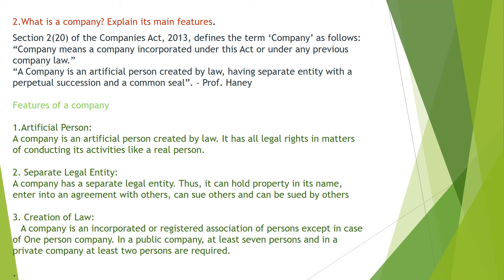Now let us move to the second question: what is a company — explain its main features. As per Section 2(20) of the Companies Act of 2013, a company means a company incorporated under this Act or under any previous company law. Another definition by Professor Haney: a company is an artificial person created by law with a separate legal entity, perpetual succession, and a common seal.